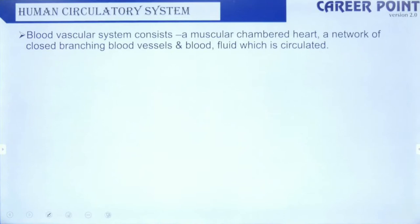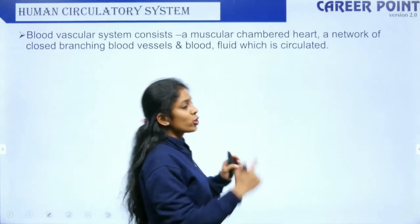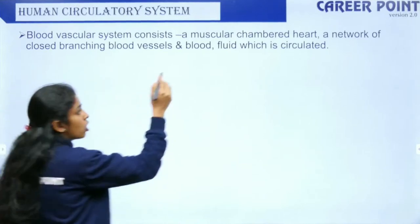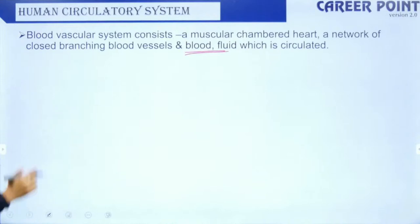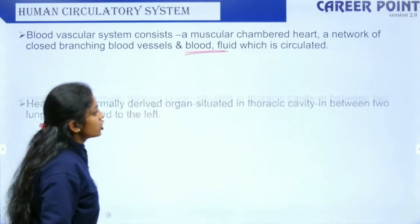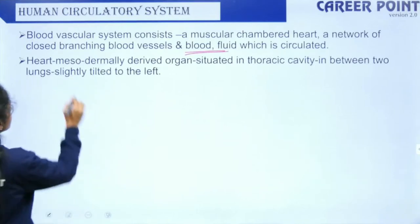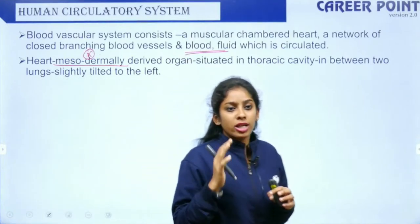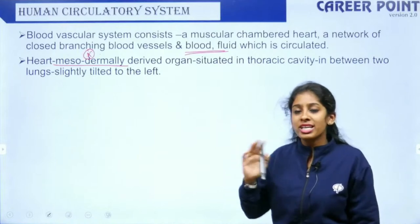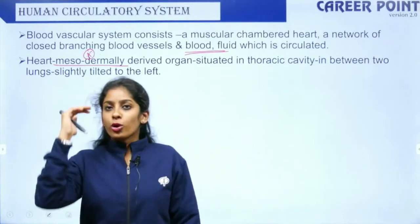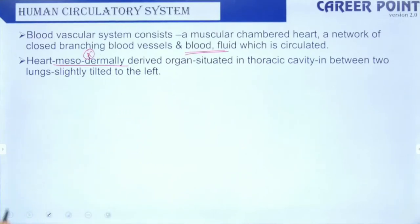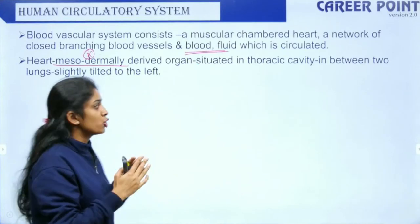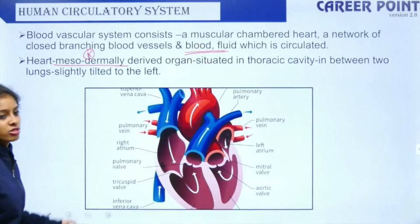We spoke about incomplete circulation: in fishes you have two atria and one ventricle where oxygenated and deoxygenated blood gets mixed — that is called incomplete circulation. Whereas in higher mammals the oxygenated and deoxygenated blood does not mix at any point — that is why we have double circulation. The heart is mesodermally derived, situated in the thoracic cavity, in between the two lungs but slightly tilted towards the left.